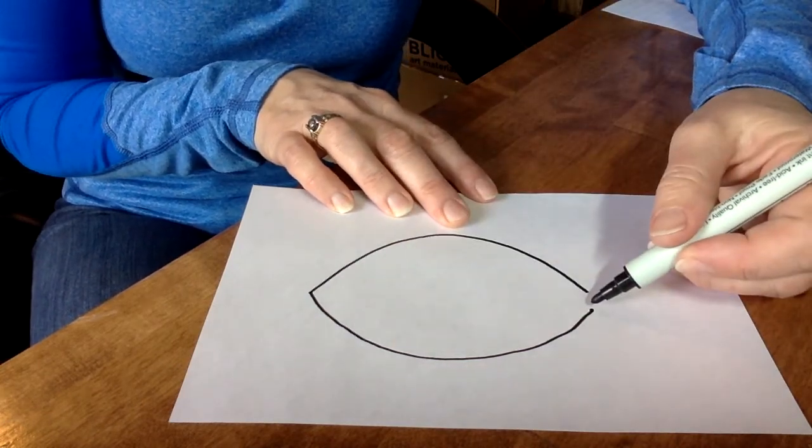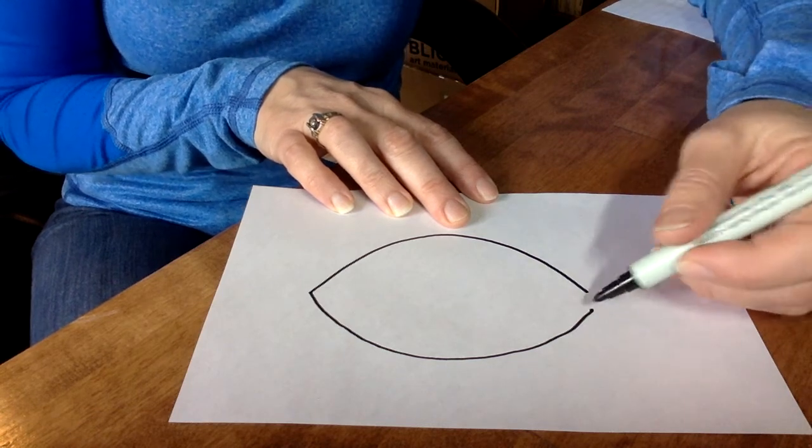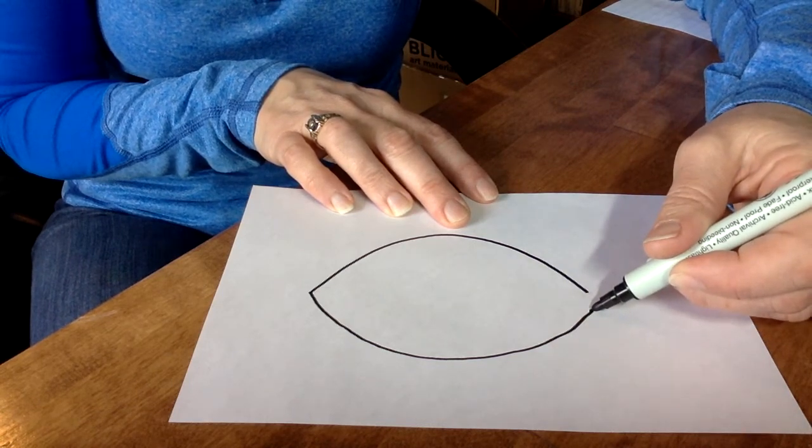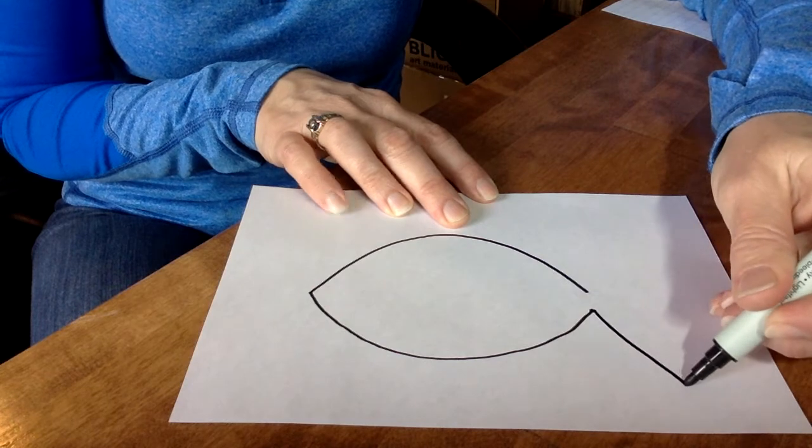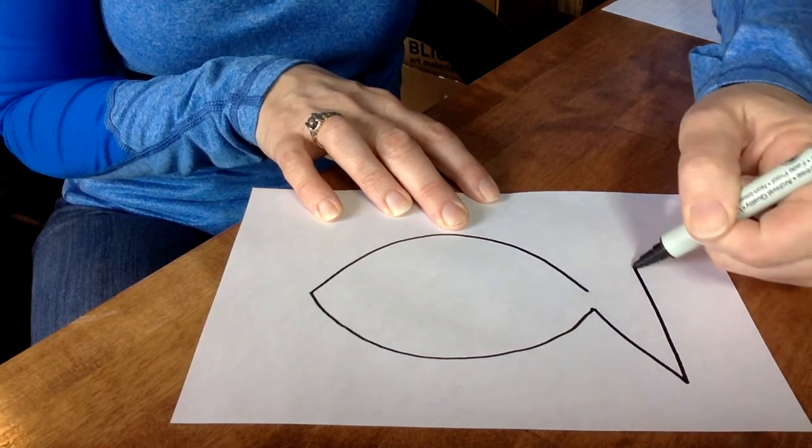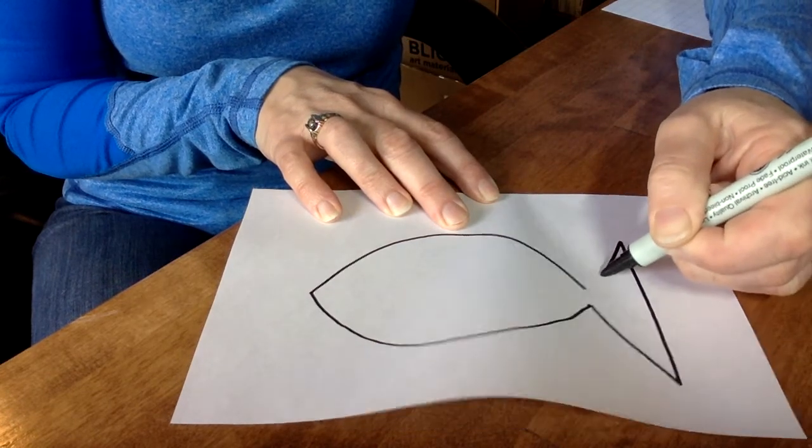Now I'm going to think of some of the shapes I might see for the rest of the fish. Back here, I might think about a triangle for the tail.